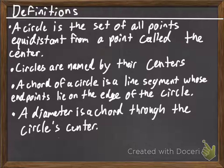We're going to start with definitions. Told ya. So, a circle. So this is our definition of a circle. A circle is the set of all points equidistant from a point called the center. Circles are named by their centers.